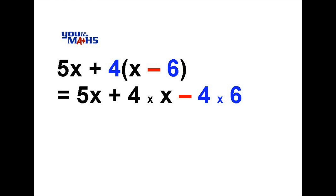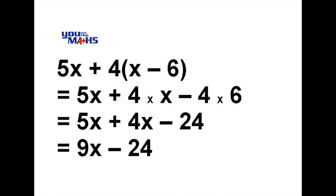We look to simplify those, so 4 multiplied by x is 4x and 4 multiplied by 6 is 24. And then we collect the like terms. So 5x and 4x are like terms, that comes to 9x, and then we've got the subtract 24 at the end.